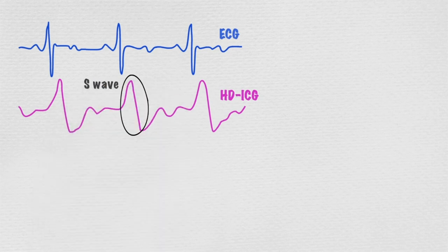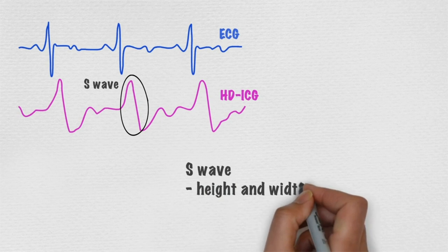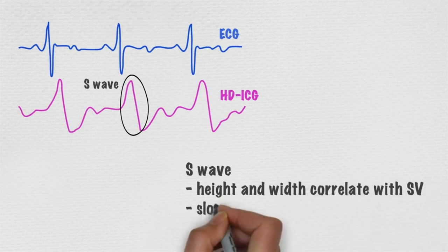The height and the width of the S-wave correlate with stroke volume, and the slope correlates with contractility.